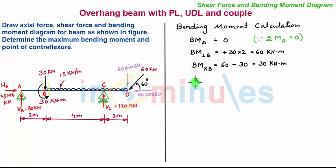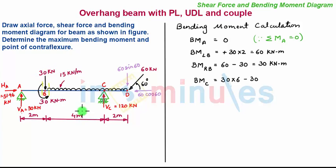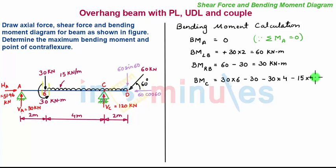Moving the section towards point C, the bending moment at C — considering the left-hand side — includes: a clockwise moment from the 30 kN reaction at a distance of 6 m (30 × 6), minus the anticlockwise couple of 30 kNm, minus the anticlockwise moment from the 30 kN force at a distance of 4 m from C (30 × 4), and minus the anticlockwise moment from the uniformly distributed load of 15 kN/m over 4 m acting at 2 m from C (15 × 4 × 2). This gives a value of minus 90 kNm.